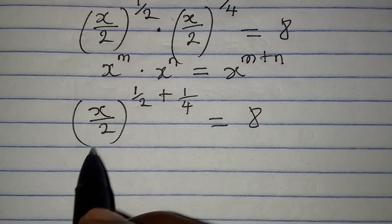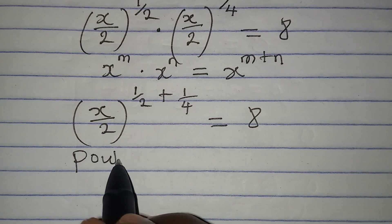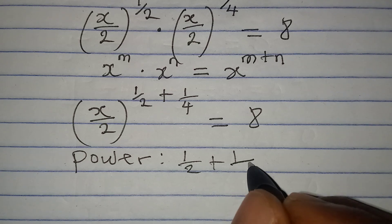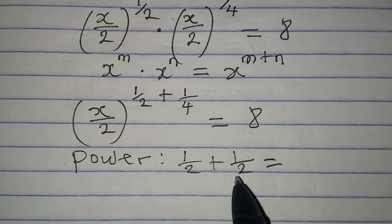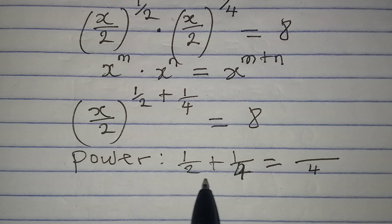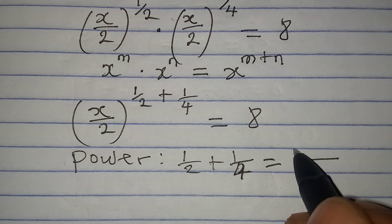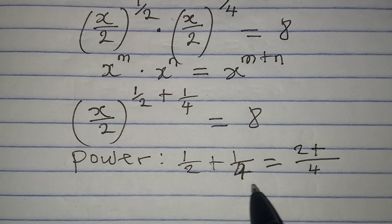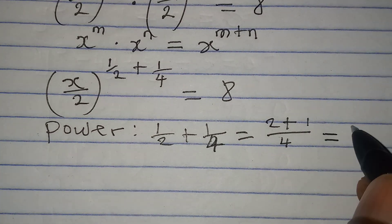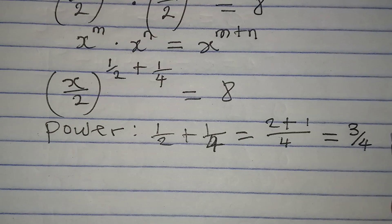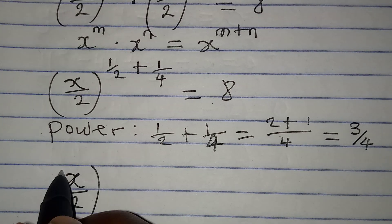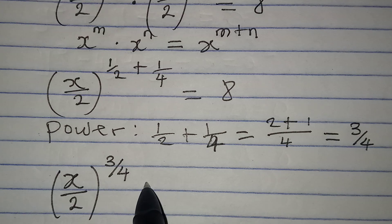This is still equal to 8. For the power, I have 1 over 2 plus 1 over 4. The LCM is 4. Four divided by 2 is 2, times 1 is 2; plus 4 divided by 4 is 1, times 1 is 1. So I get 3 over 4 as the power. This means I have x over 2 to the power of 3 over 4 equals 8.